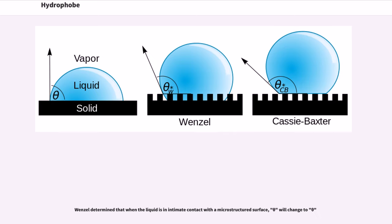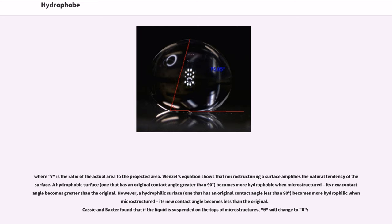Wenzel determined that when the liquid is in intimate contact with the microstructured surface, theta will change to theta W, where R is the ratio of the actual area to the projected area. Wenzel's equation shows that microstructuring a surface amplifies the natural tendency of the surface. A hydrophobic surface, one that has an original contact angle greater than 90 degrees, becomes more hydrophobic when microstructured; its new contact angle becomes greater than the original.